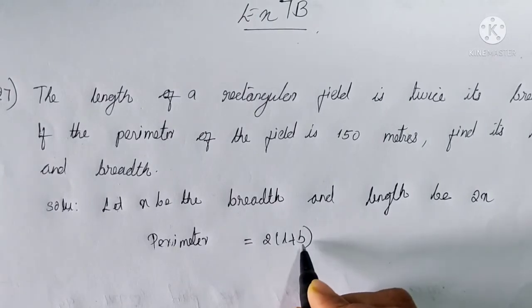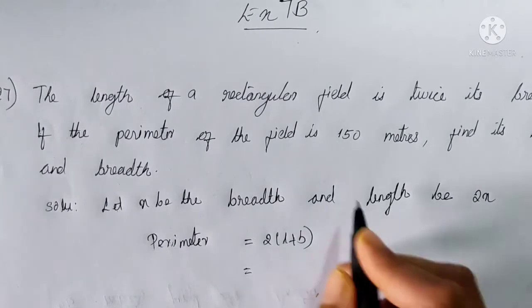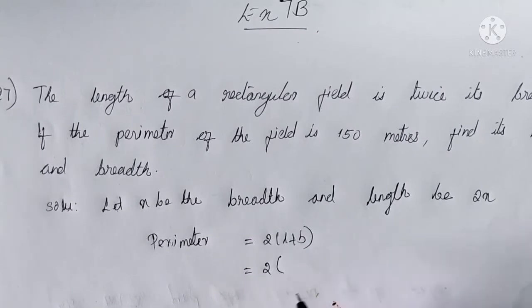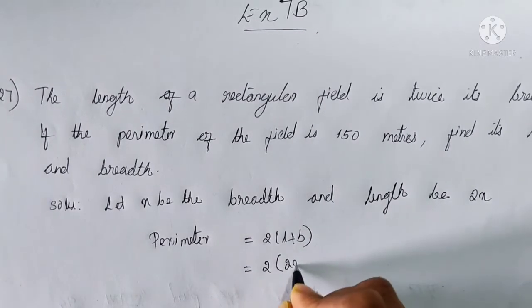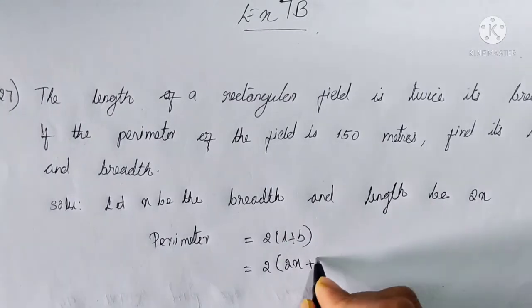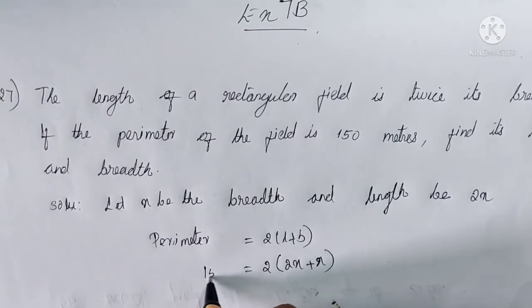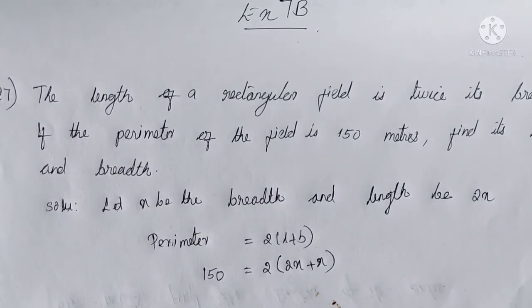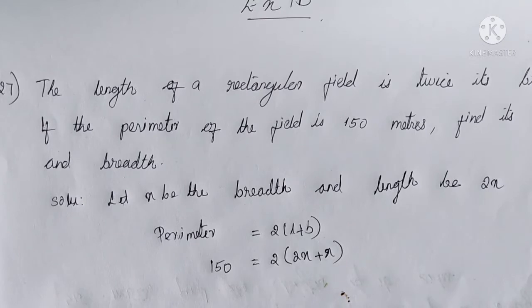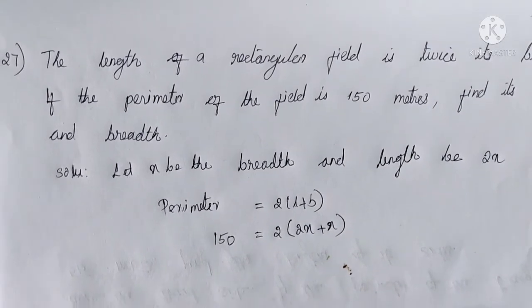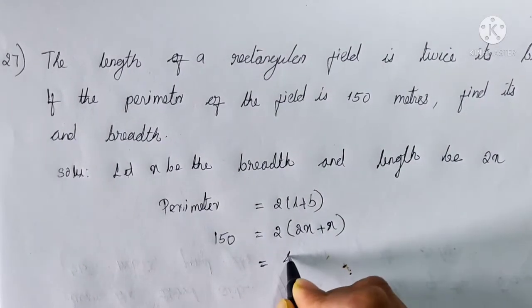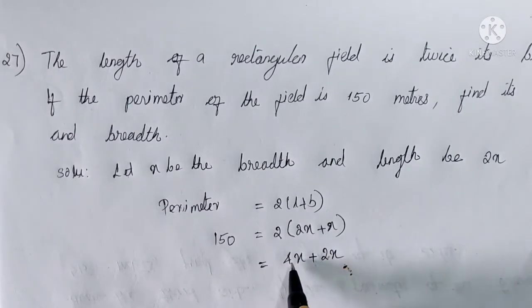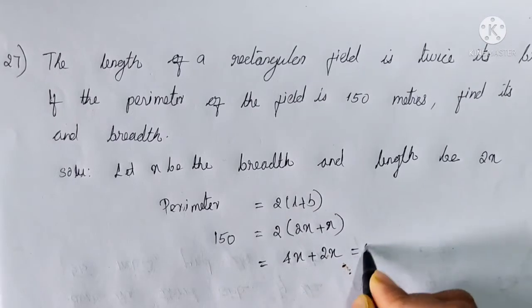L is length, B is breadth. We can substitute our values in this equation. That is, 2 into L is 2X and B is X. Perimeter is equal to 150. So 150 is equal to 2 into (2X plus X). We can expand this: 2 into 2X is 4X, plus 2 into X is 2X. So 4X plus 2X becomes 6X.